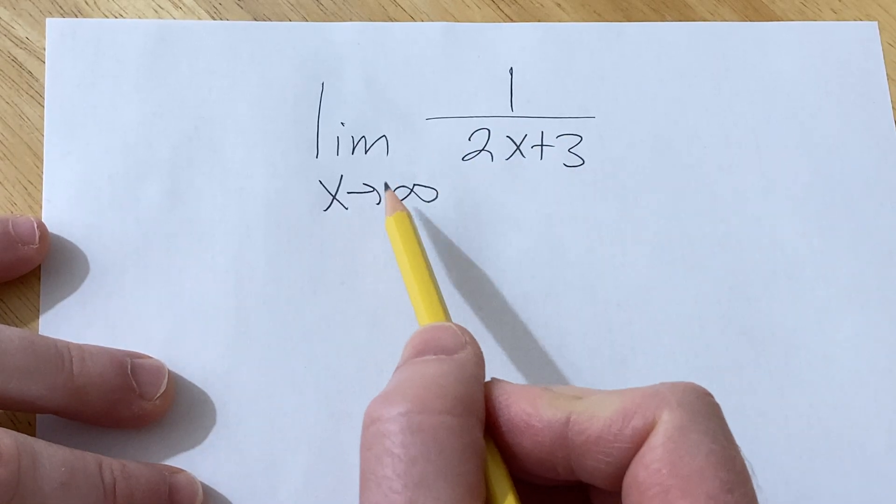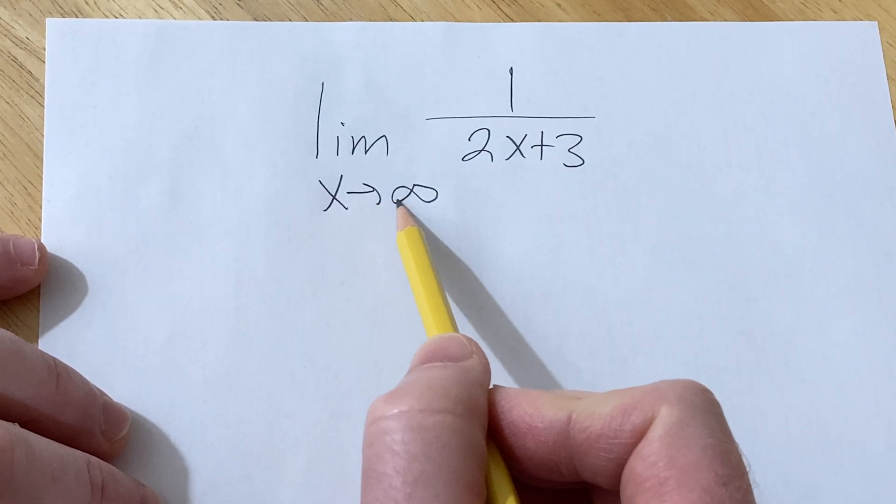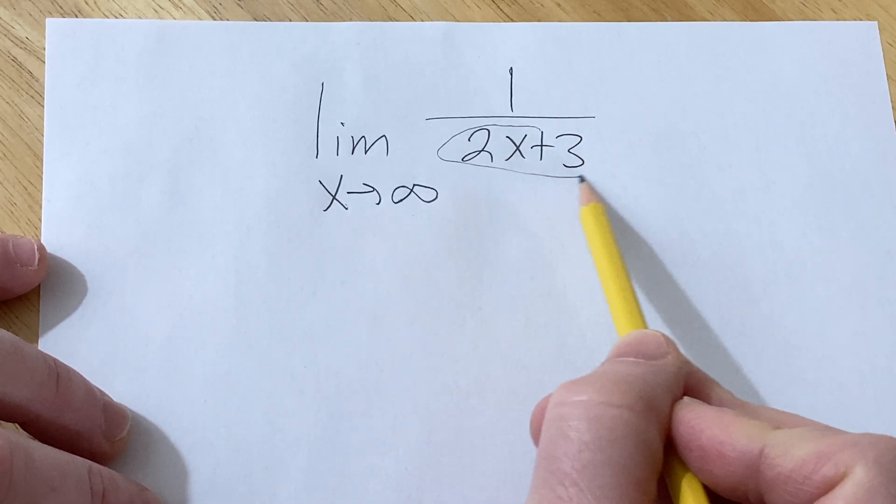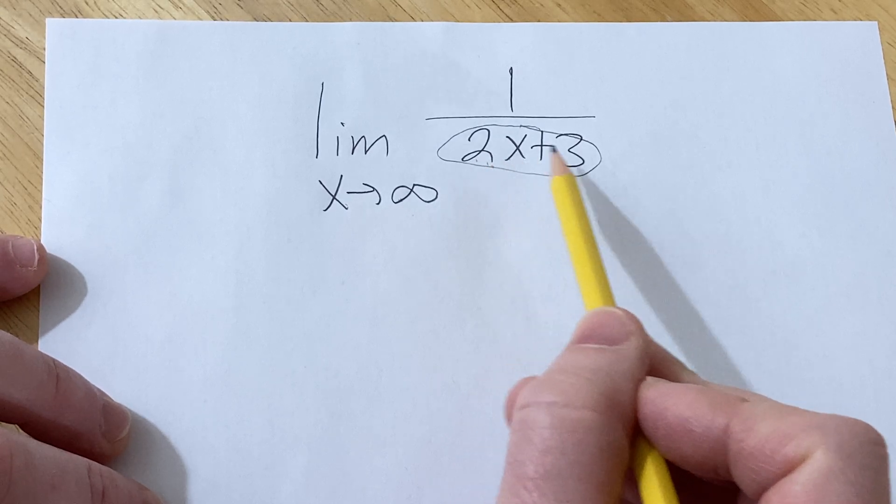So we have to think about what's happening. When x is getting really big, x is approaching infinity, you have to ask yourself, what's happening to this? Well, it's getting really big also because it's 2 times x plus 3.